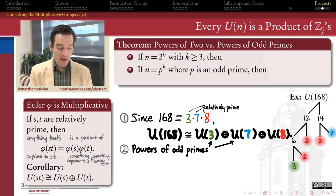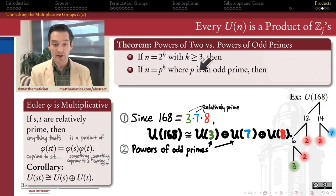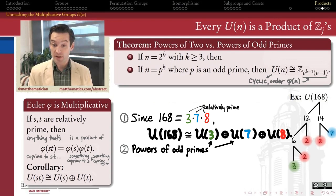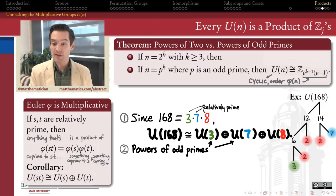The second question is: how do I understand the powers of odd primes? So 3 to the first power, 7 to the first power — what can I say about the structure of those multiplicative groups as finite abelian groups? If p^k is a power of an odd prime, then according to number theory, the group U(p^k) is actually cyclic — there exists a generator — and therefore U(p^k) is isomorphic to a cyclic group of order φ(p^k) = p^(k−1)·(p−1).